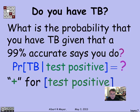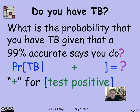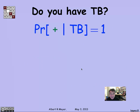"Test positive" is a big phrase, so let's just abbreviate it by plus. Plus means the test said positive — you have TB. That's the conditional probability we're trying to calculate. What do we know about the test?